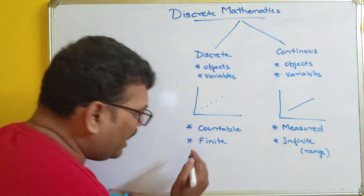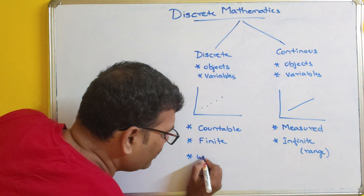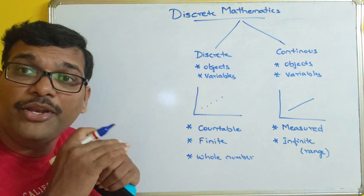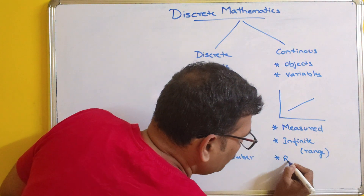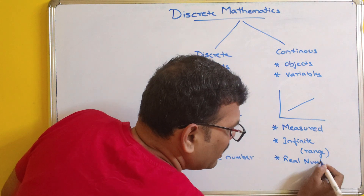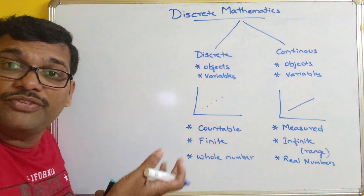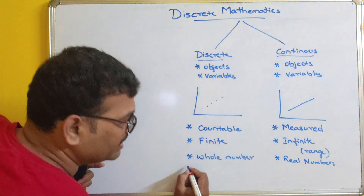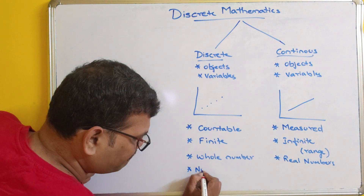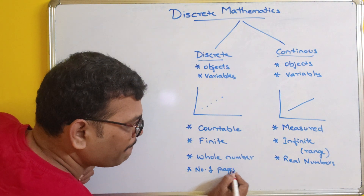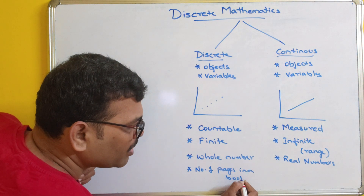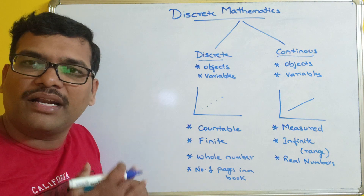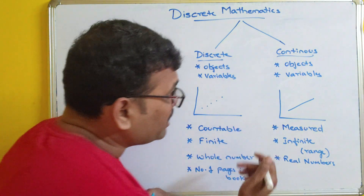An example of discrete values is whole numbers — there are no decimal values. An example of continuous values is real numbers, which have fractions. A practical example of discrete is the number of pages in a book — you can count the number of pages in any textbook. That is a counted value.